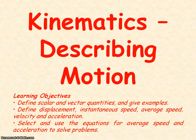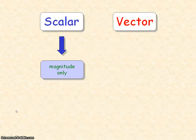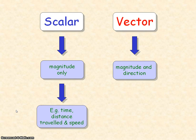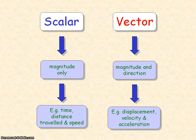We're going to be looking at kinematics, which describes motion. Scalar quantities have magnitude only, whereas vector quantities have both magnitude and direction. Examples of scalar quantities would be time, distance travelled, and speed, whereas examples of vector quantities would be displacement, velocity, and acceleration.